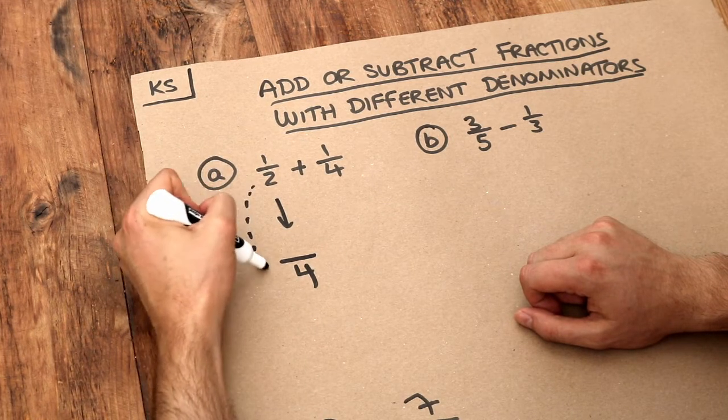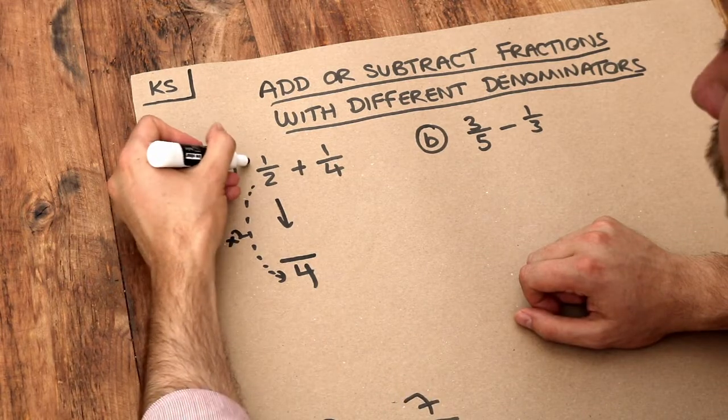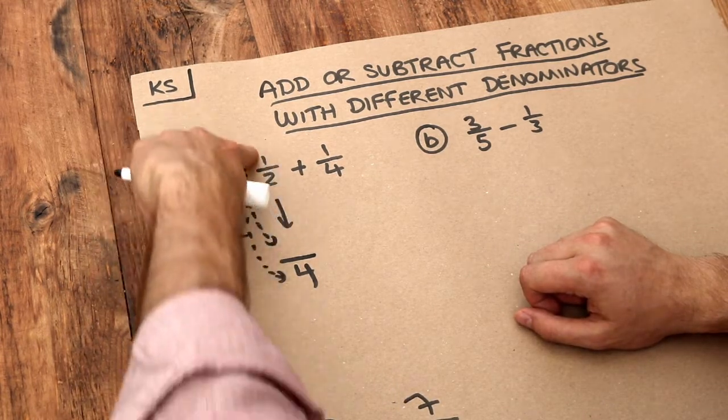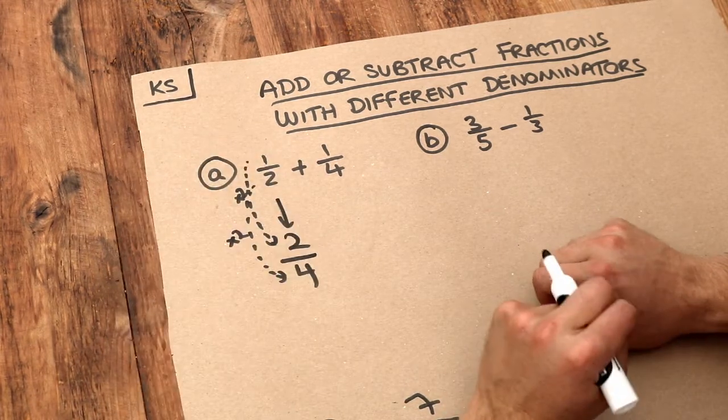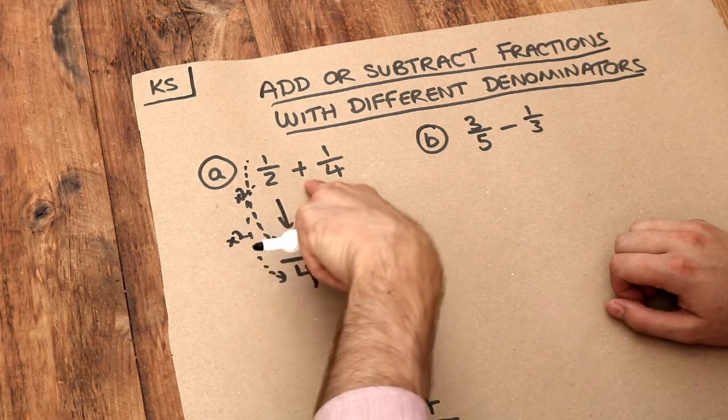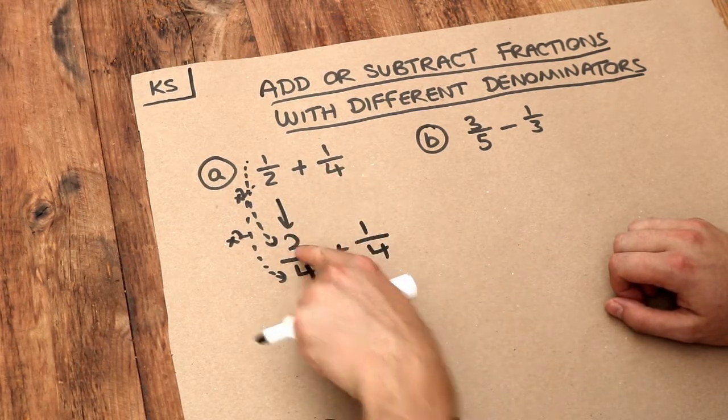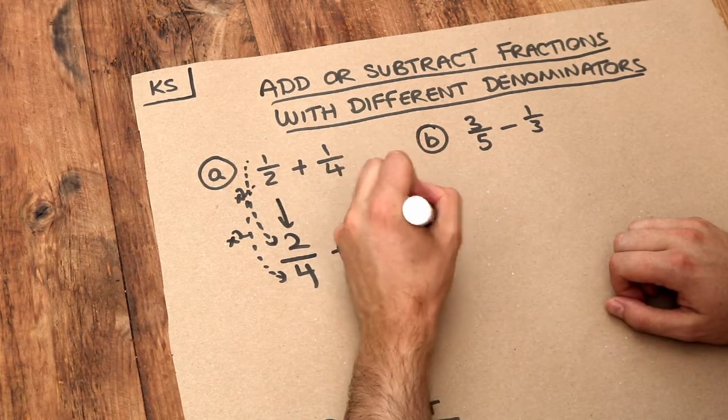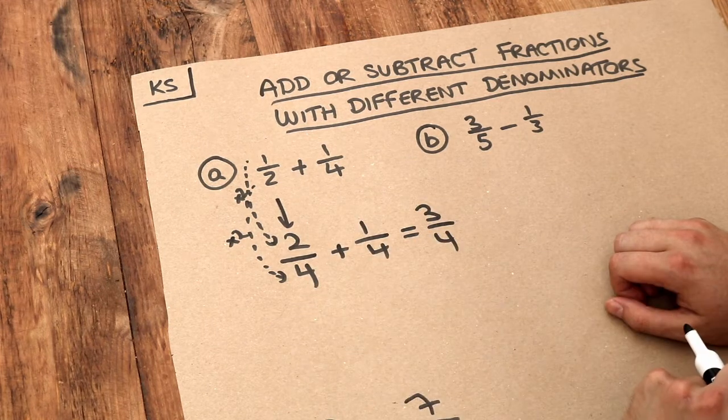If you turn this into something over 4, we've multiplied the bottom by 2 so we have to do the same to the top. We have to times the top by 2 as well. So if we do 1 times 2 we get 2. So we can see 1/2 is the same as 2/4. But now look we can add that quarter and this is easy now. We've got 2/4 plus an extra 1/4 and we have 3/4 because we can now just add the numerators now that the denominators are the same.